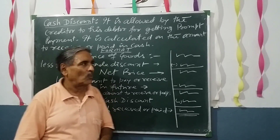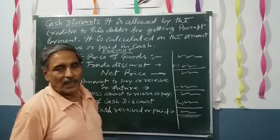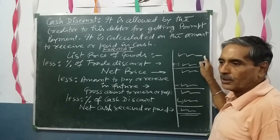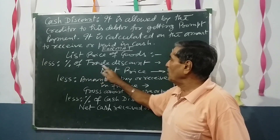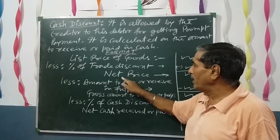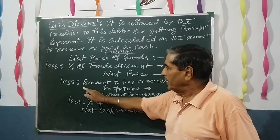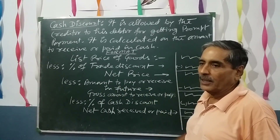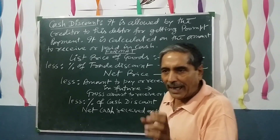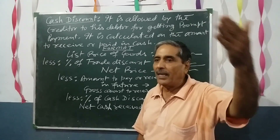The format for cash discount calculation: first write the list price of the goods. Then subtract the percentage of trade discount from the list price to get the net price — if it is a purchase, write net purchase; if it is a sale, write net sales. From here, deduct the amount to be paid or received in future. Suppose the customer is not ready to pay the full amount in cash right now and says 40% he will give now and 60% he will pay in future.